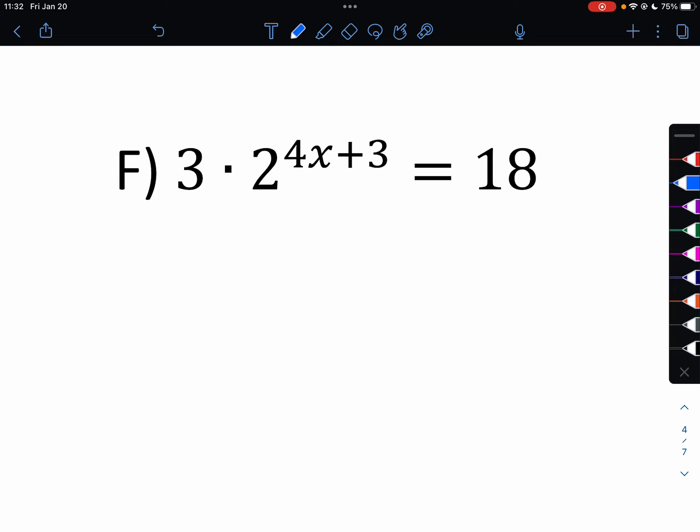Okay, letter f. So we want to isolate this first. So we're going to divide by 3 on both sides. So 2 to the 4x plus 3 equals 6. So again, we can't write 6 as 2 to the power of anything. So again, we can just do what we did in the last problem. Set this equal to y1 and this equal to y2.